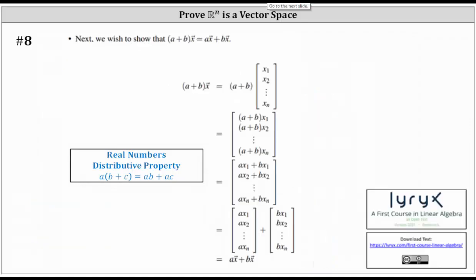Step eight: we show that (a + b) times vector x equals a times vector x plus b times vector x. Since (a + b) is in parentheses, we begin by performing scalar multiplication, then apply the distributive property once we have everything inside one column matrix. We break this into the sum of two column matrices: a times vector x and b times vector x, completing the proof. Step eight is complete.